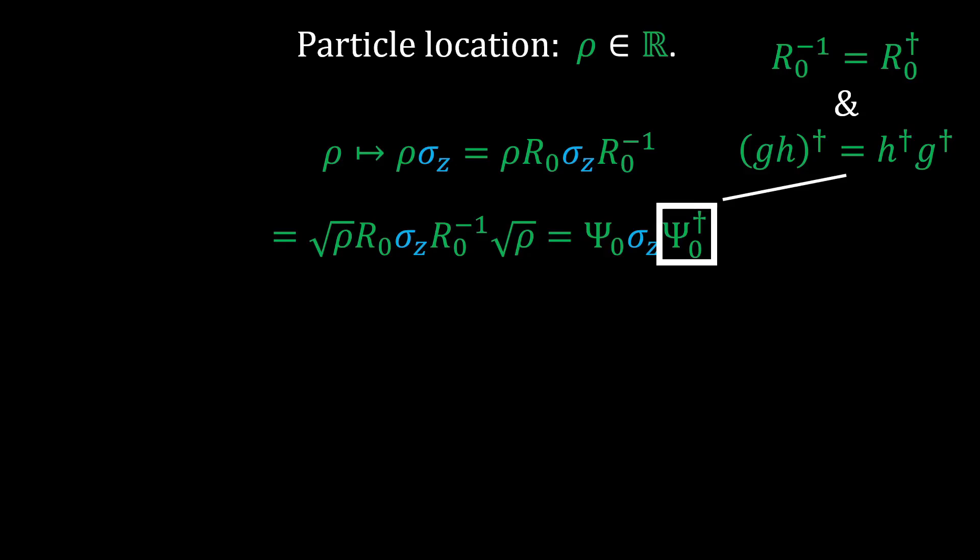Notice that there is now a psi dagger. In the algebra of physical space, there is an operation called reversion, which reverses product order. It turns out that the inverse of r-naught is its reversion, so when we relabel the square root of rho times r-naught as psi-naught, we use the dagger instead. In this case, it is fully equivalent to the Hermitian conjugate.